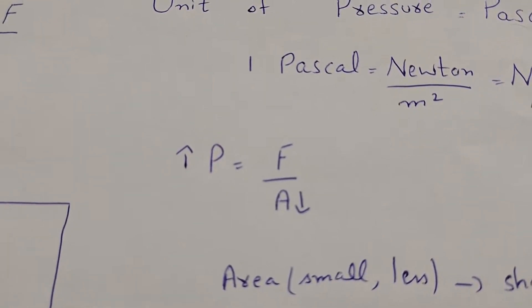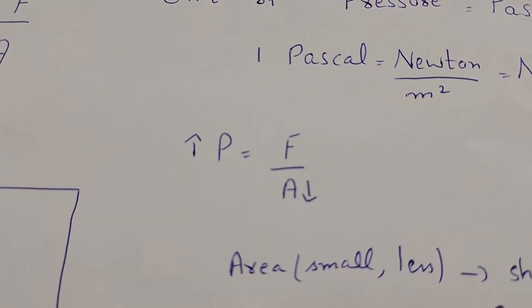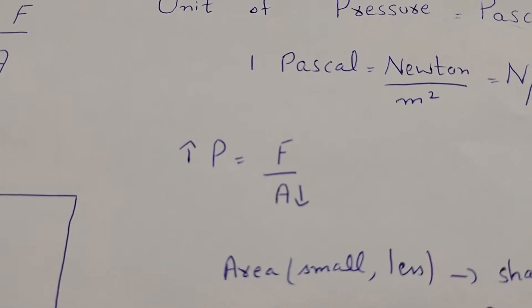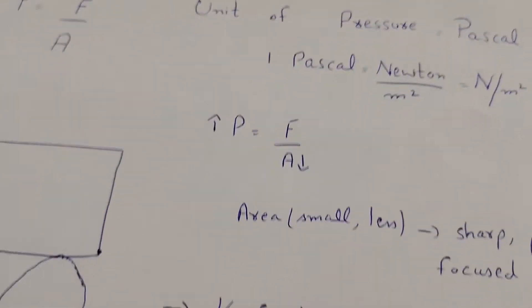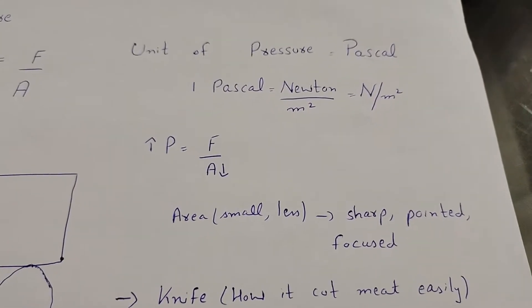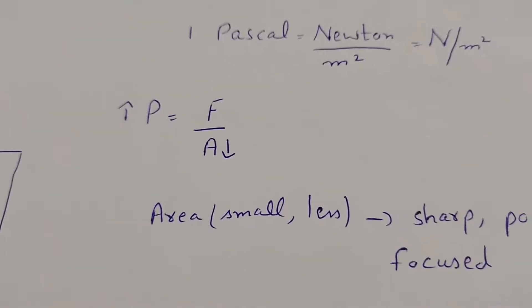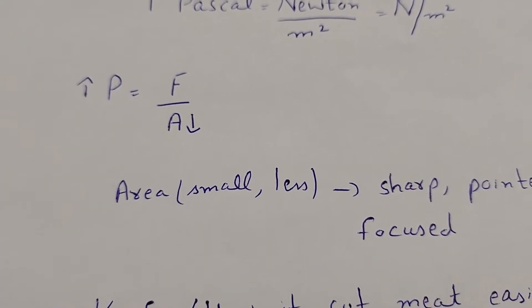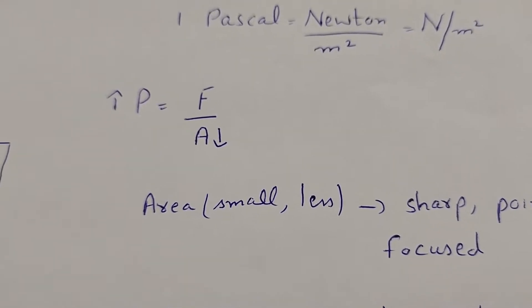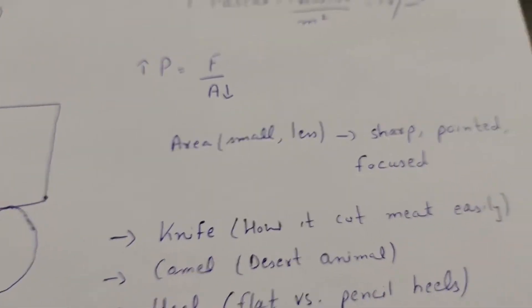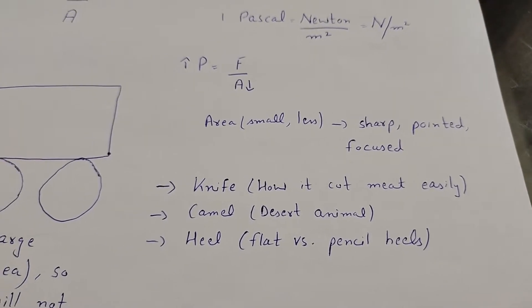Just as density and volume are inversely proportional to each other, in the same way pressure and area are inversely proportional to each other. Whenever you see words like 'sharp' or 'pointed,' it means the area is less or small, and whenever the area is small, the pressure is greater.